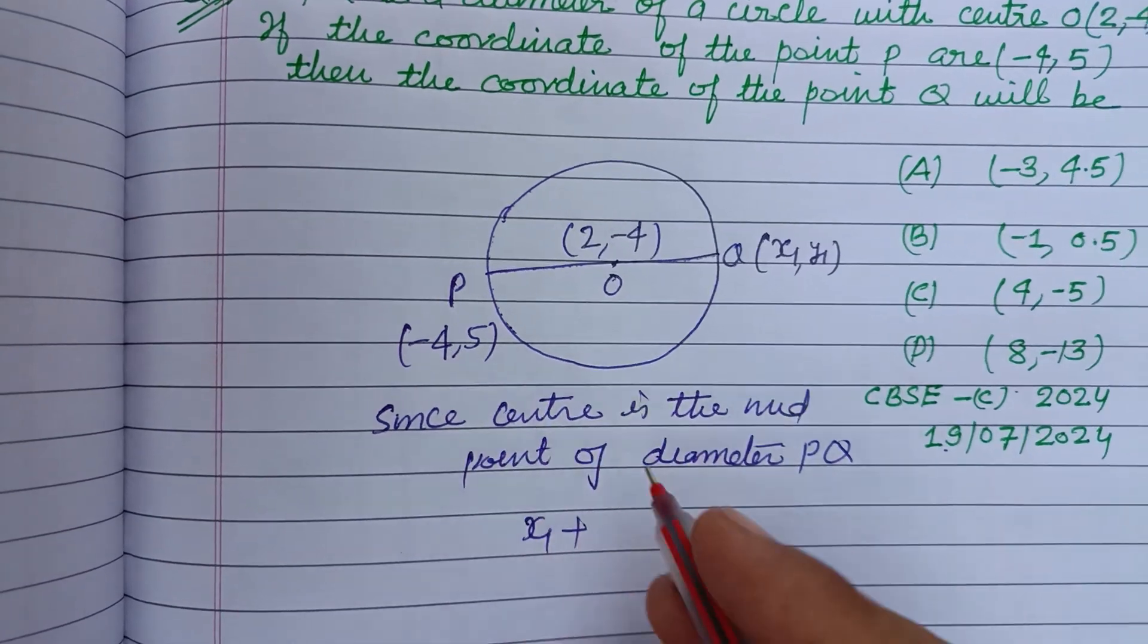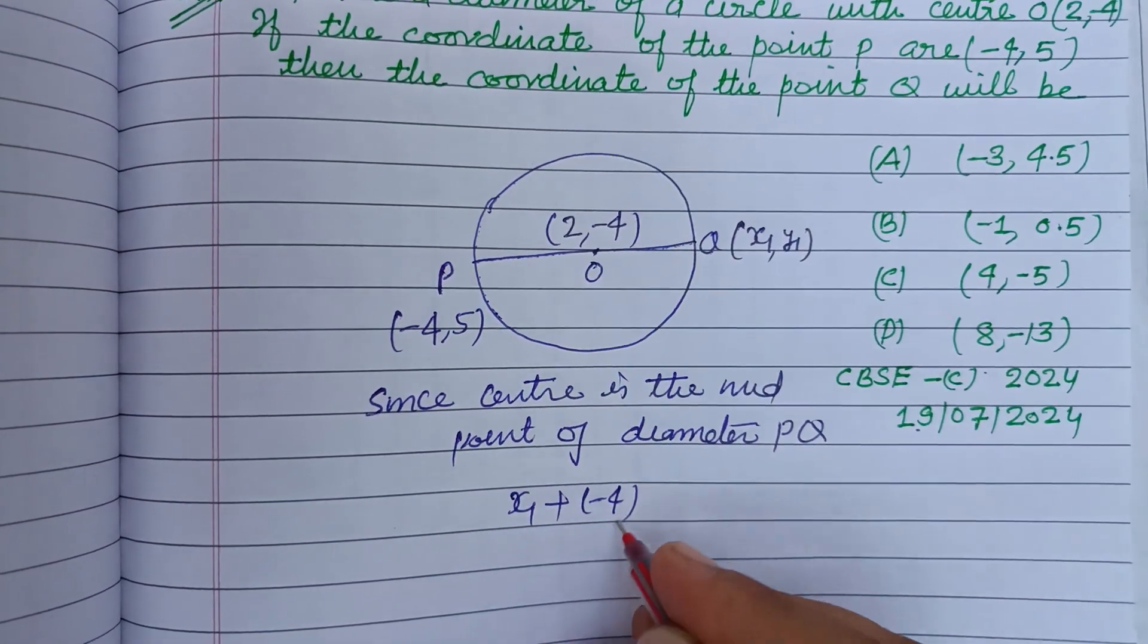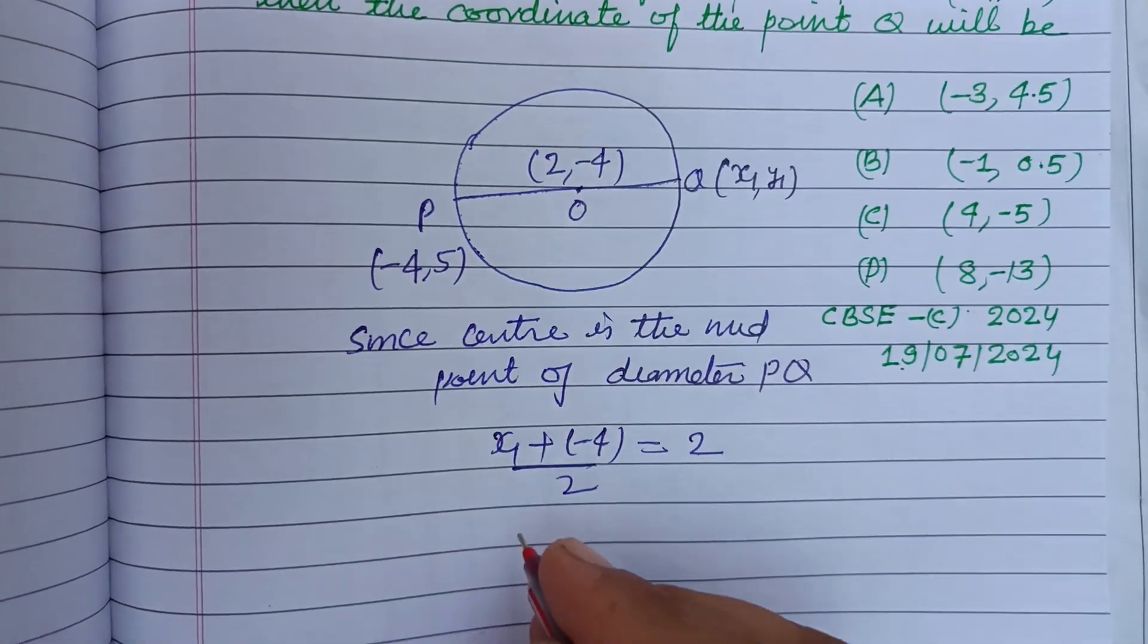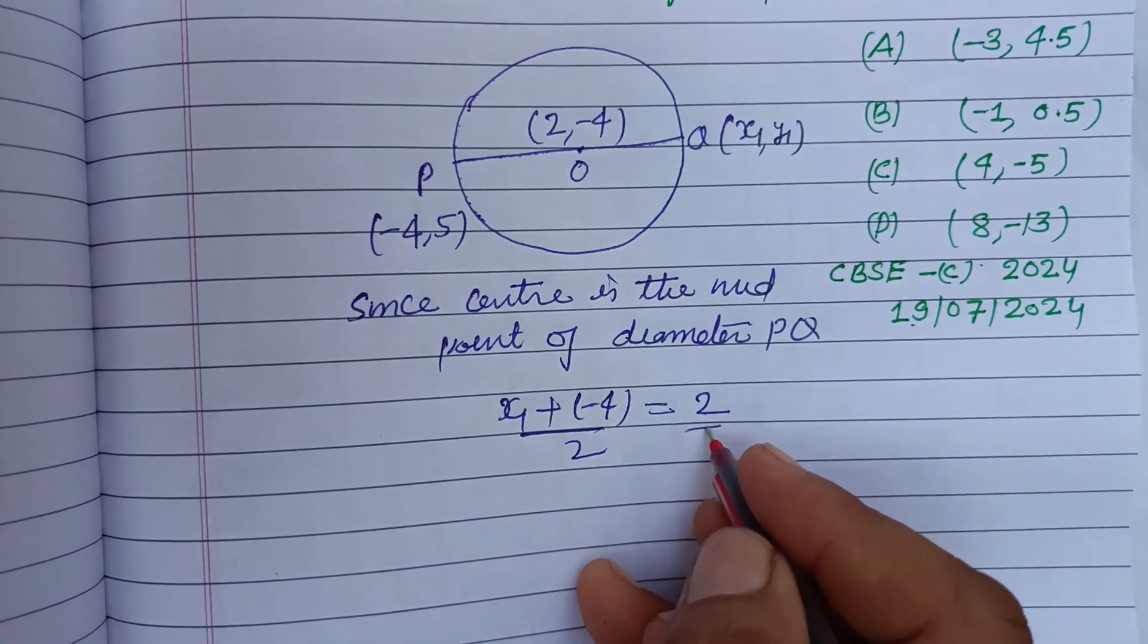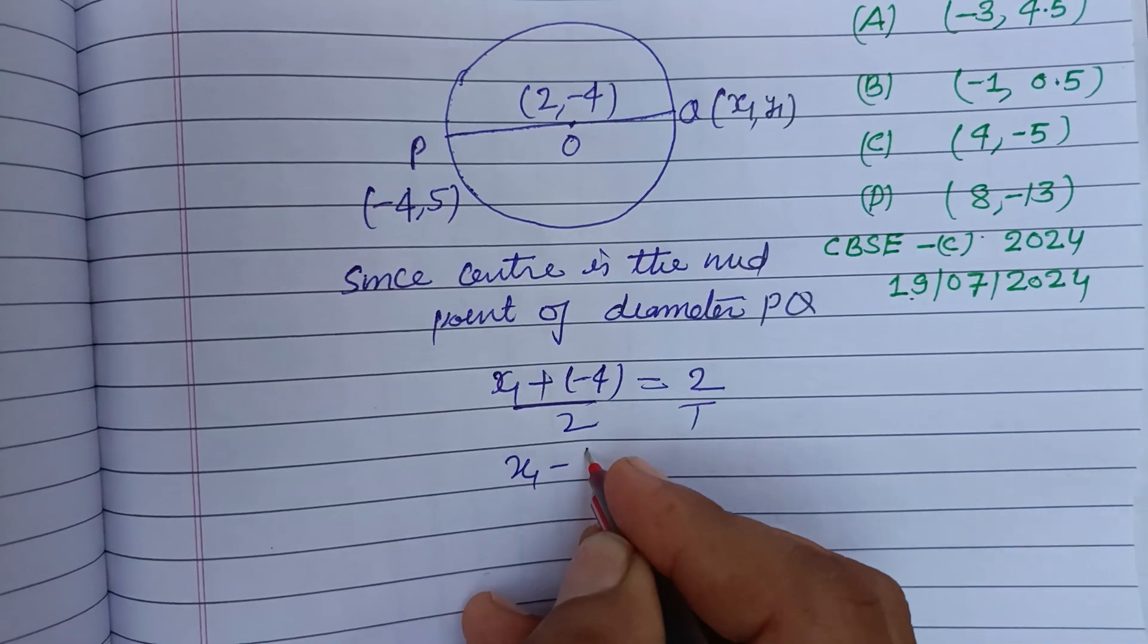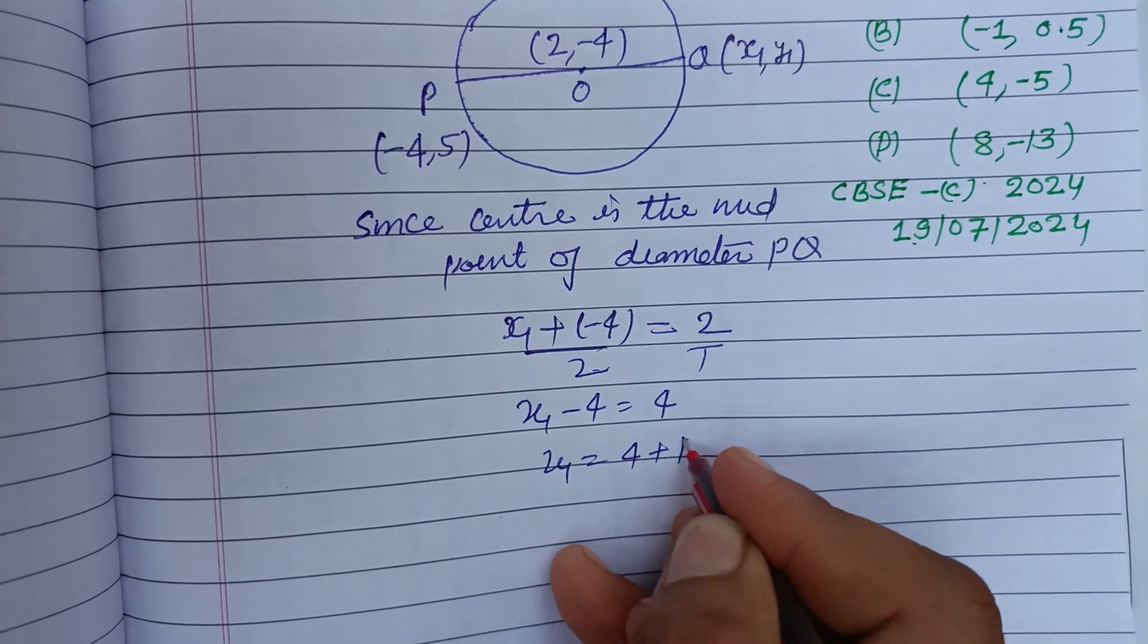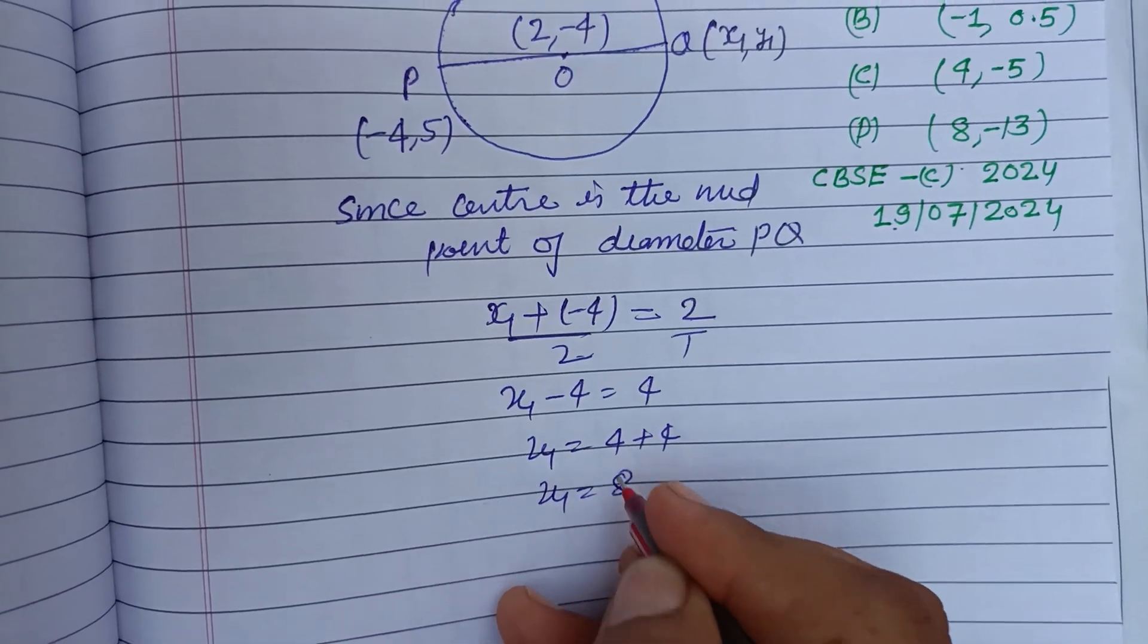(x1 + x2)/2, this is (x1 + (-4))/2 = 2. On cross multiplication we get x1 - 4 = 4, so x1 = 4 + 4, x1 = 8.